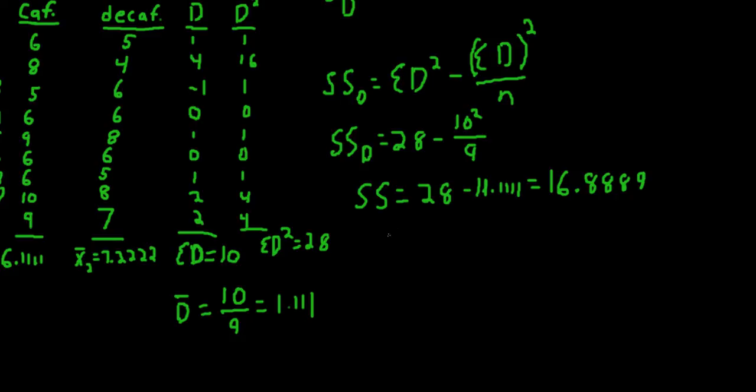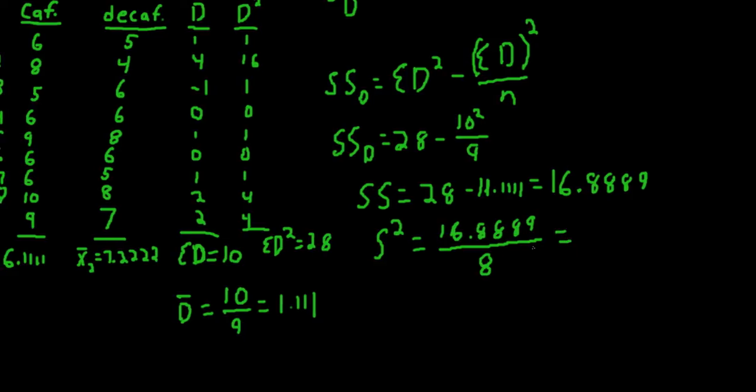Now to get the variance of the deviation scores, we simply divide sum of squares by n minus 1. So we'll divide that by 8. So 16.889 divided by 8 gives us a variance of 2.111.